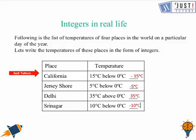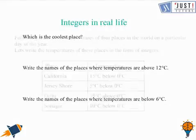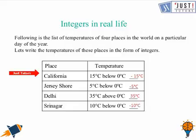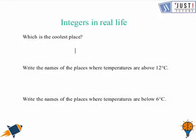Now let's look at some questions related to this. Which is the coolest place? If you are looking at the coolest place, you need to look at which temperature you see on the left most side. Which one do you think is the left most side on a number line? I think the answer is minus 15 degrees Celsius. So California is the answer for the first one.